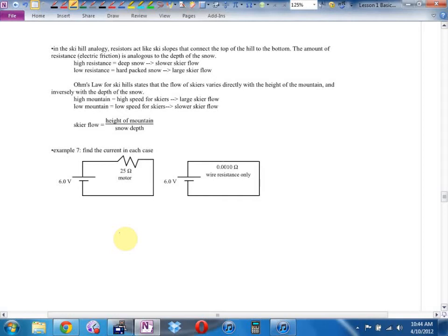So in our ski hill analogy, we said this: voltage, it's like a ski lift if it's a battery, chairlift, or each resistor is a voltage drop. You're losing some altitude going through a resistor like a ski hill. So resistors act like ski slopes that connect the top of the hill to the bottom. The amount of resistance, which is like electric friction, is sort of analogous to the depth of the snow. High resistance, lots of powder, you can't ski very fast, smaller current. Low resistance, really slippery, you can ski fast, you can get more skiers through, lots of current. Basically, Ohm's law for ski hills says that the flow of skiers varies directly with the height of the mountain and inversely with the depth of the snow. Say what? It's easier to do.